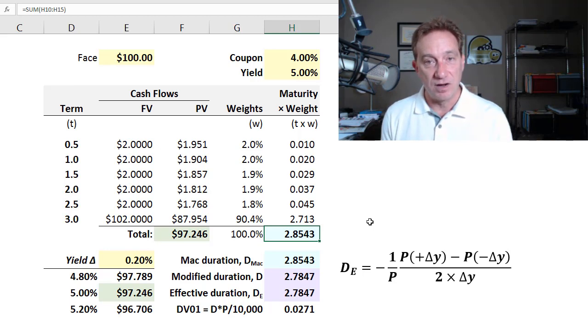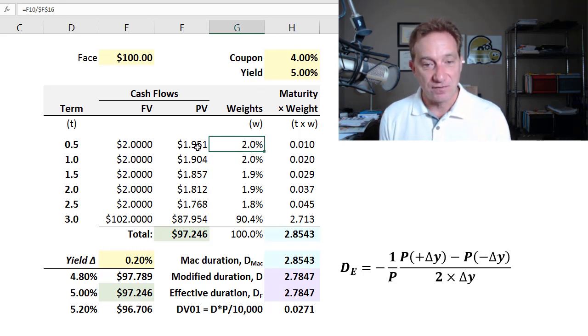The Macaulay duration is the bond's weighted average maturity. And the weights are in this column here. The weights are each cash flows present value divided by the bond's price. And the bond's price, of course, is the sum of all the cash flows. So the weights need to sum to 100. So this first cash flow here, it's the present value of this first coupon cash flow divided by the bond's price. So in present value terms, the first cash flow of the six cash flow vertices is about 2%.